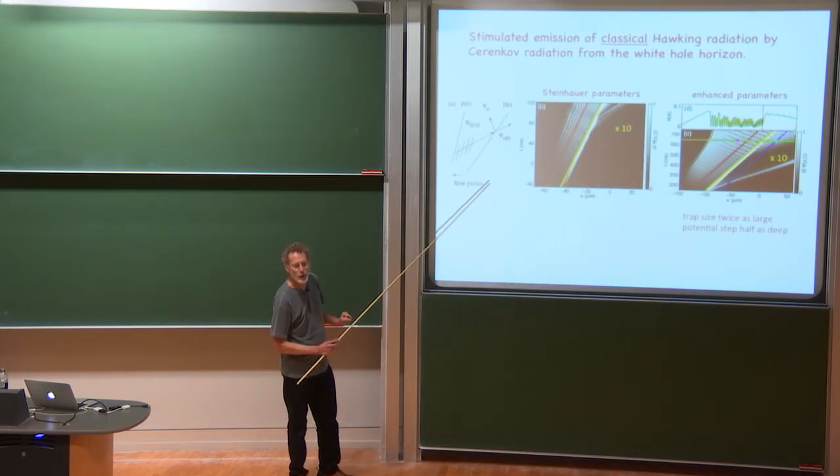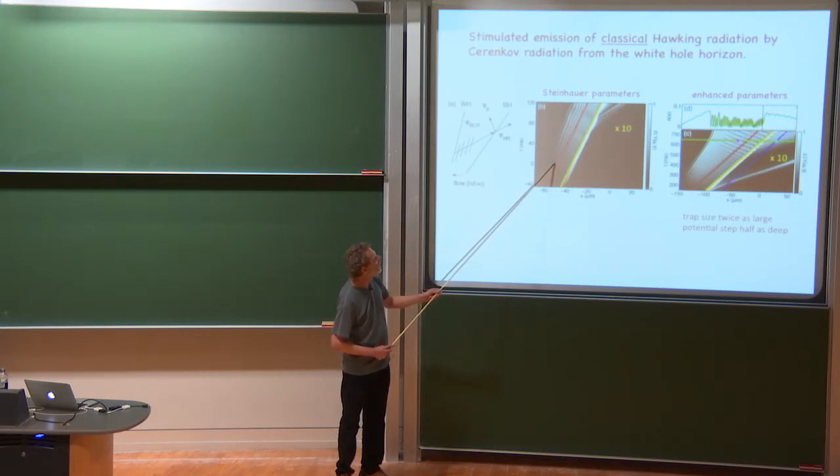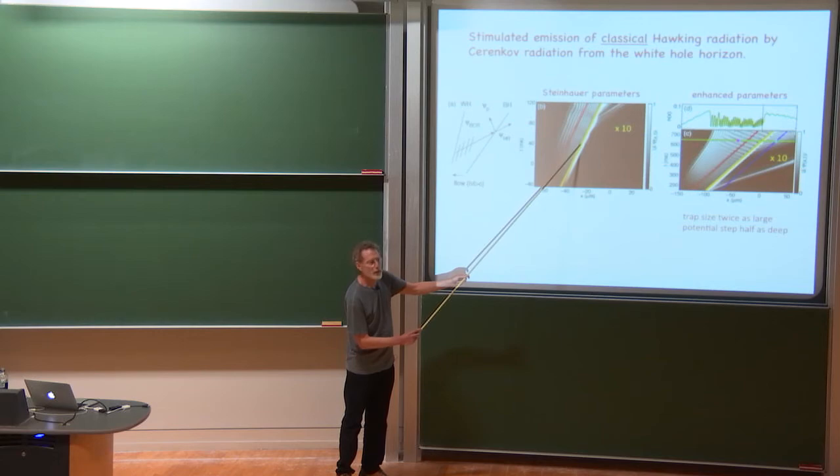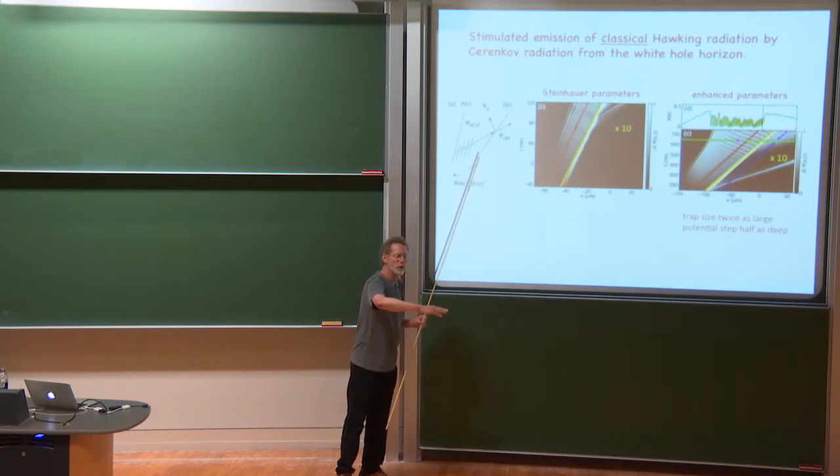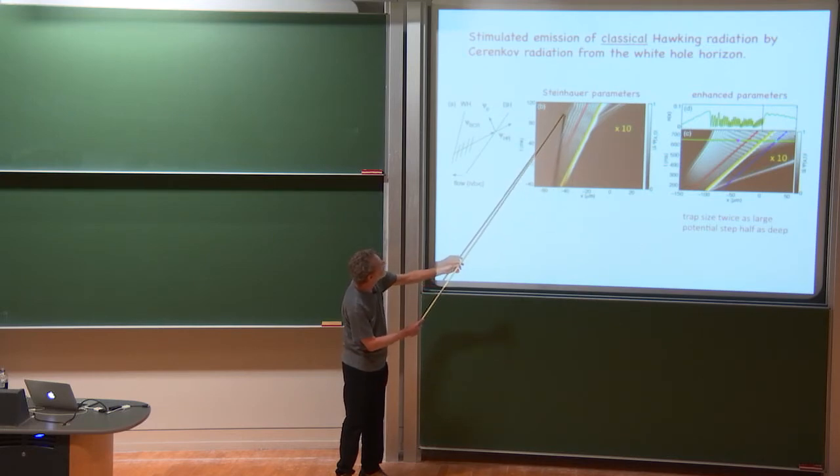At the white hole horizon, a standing wave pattern is formed and it's basically a bow wave. Just like if a boat is moving through the water faster than the speed of water waves, there's a standing wave pattern in front of the boat. That's this standing wave pattern. You can see that the wave fronts are running parallel to this boundary of the low density region and that's the white hole horizon location.